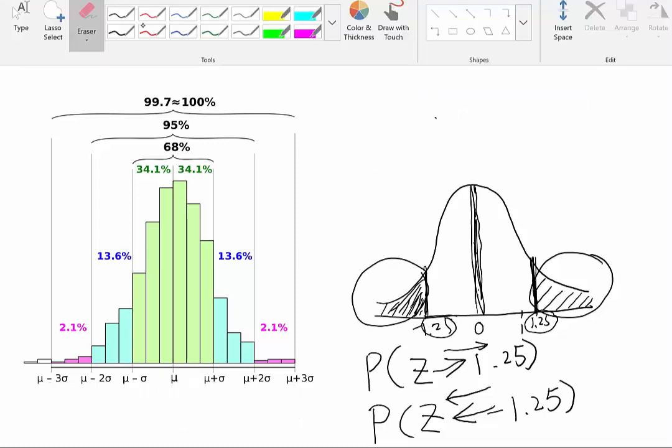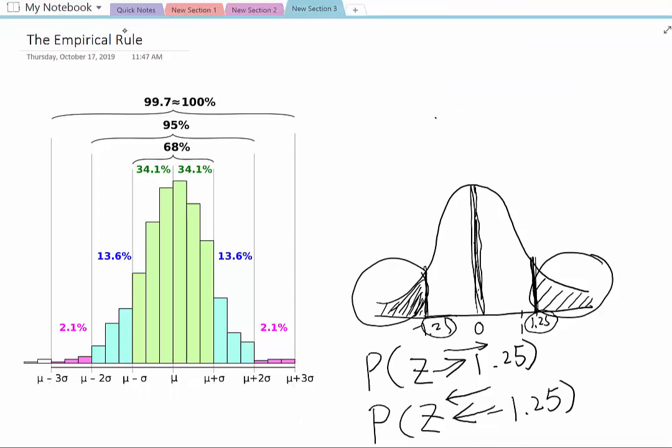Before we finish the topic, I want you to think about more. If we look at the graph on the left side, right here we have mean plus 3 standard deviations. Here we have mean subtract 3 standard deviations. The total area here is about 99.7 percent. It almost covers the whole curve.